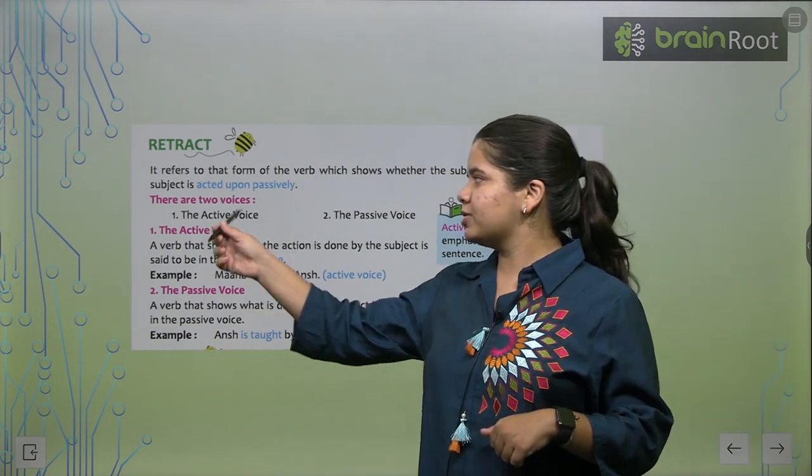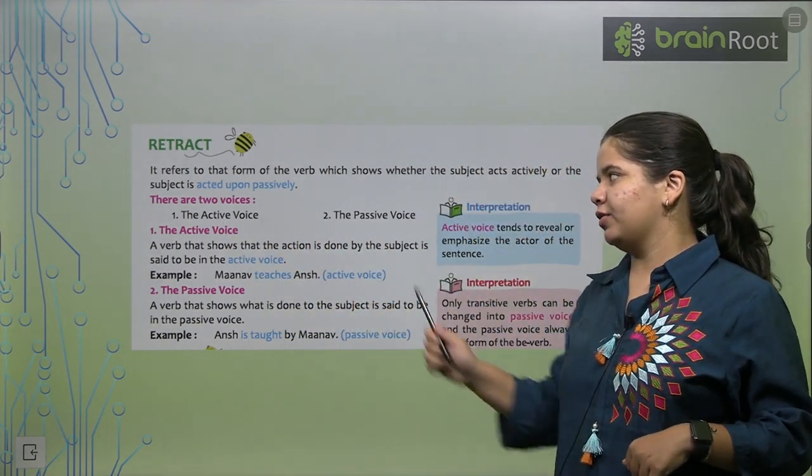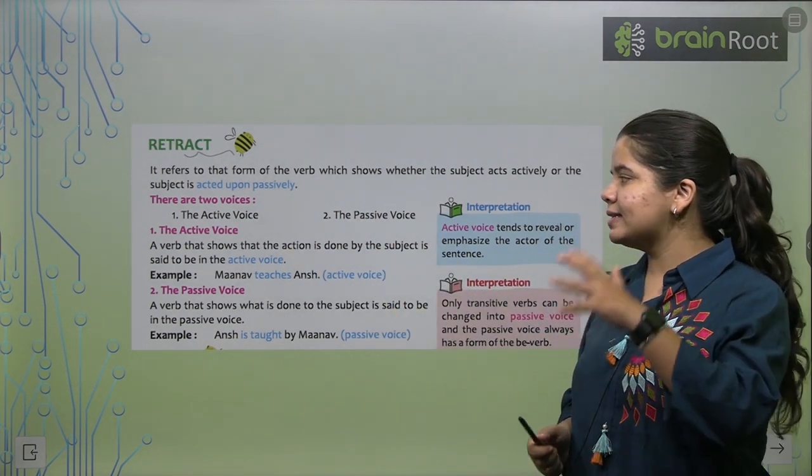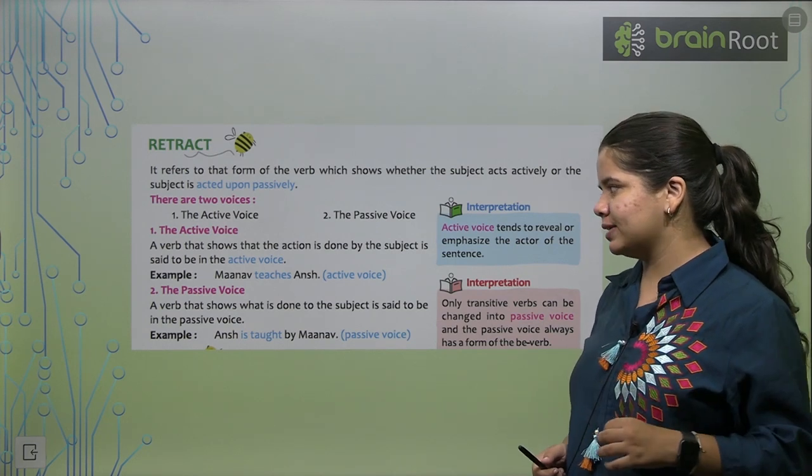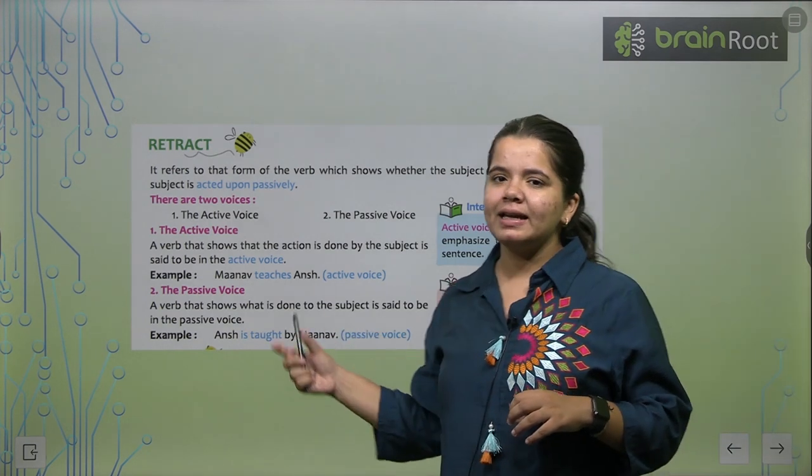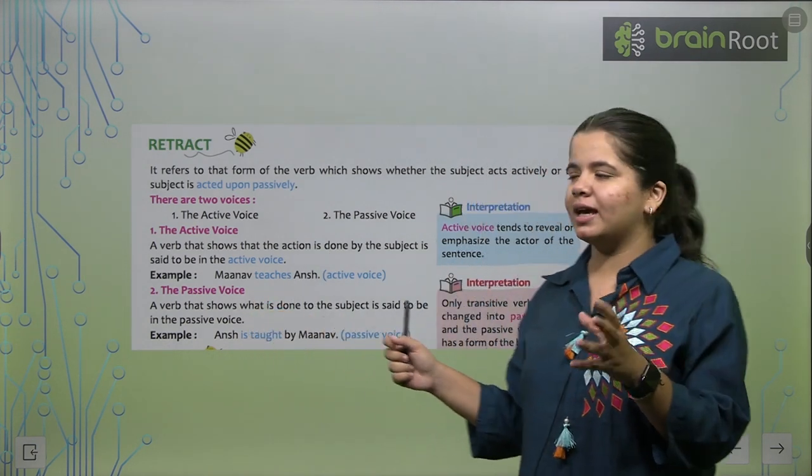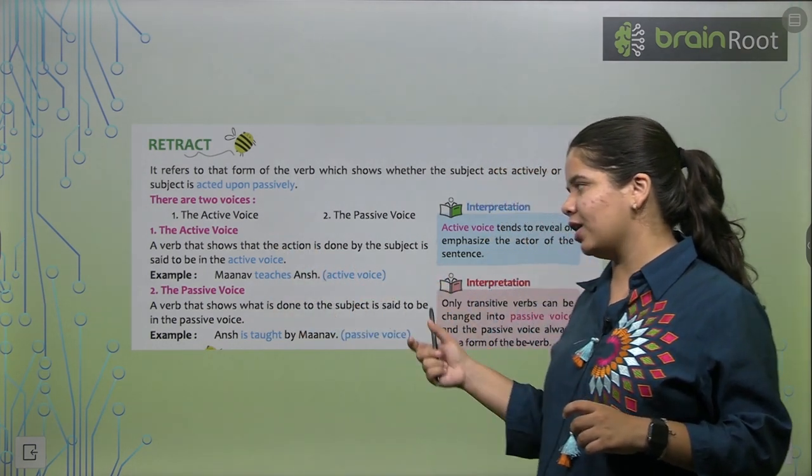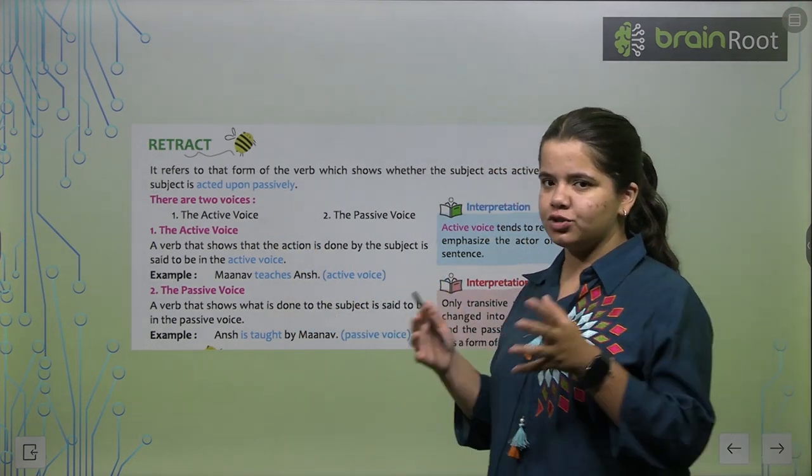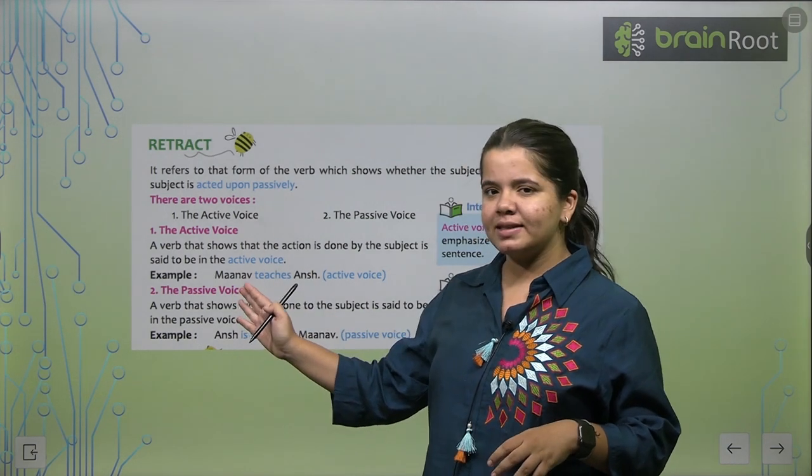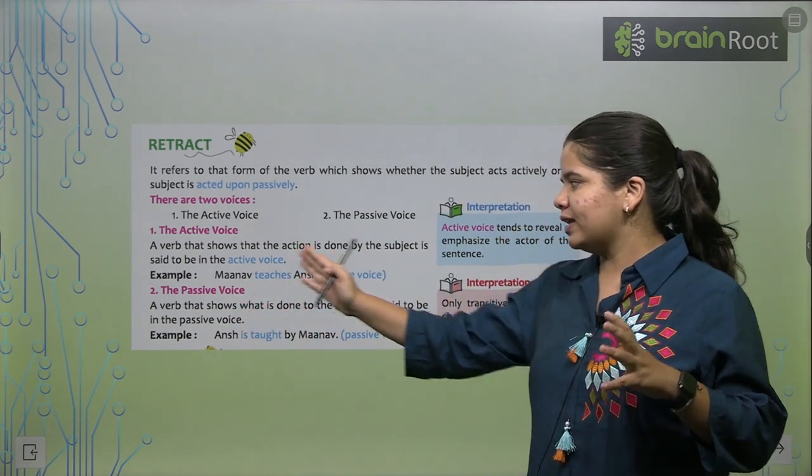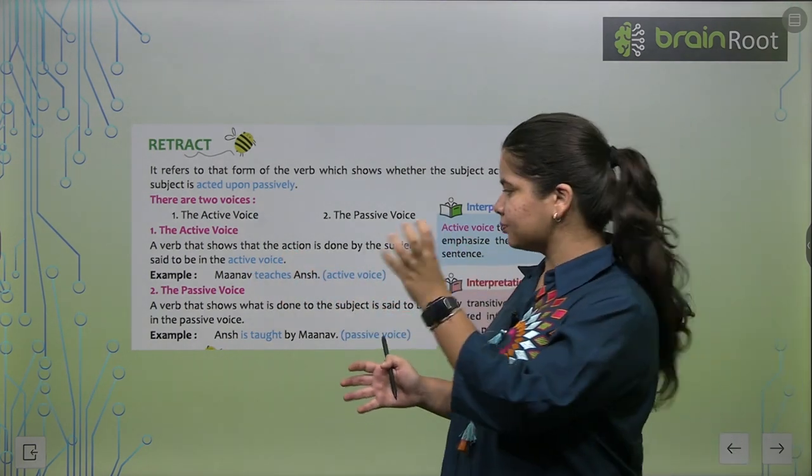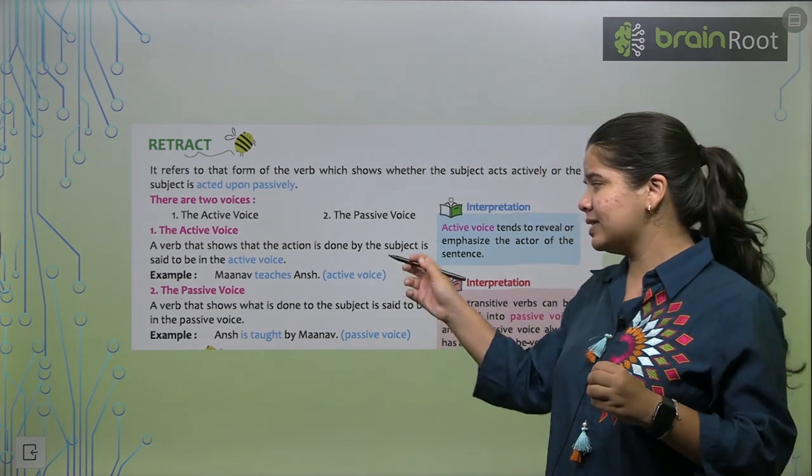Now, we have two types of voices. First is active voice, second is passive voice. The active voice is a verb that shows that the action is done by the subject. When we see that the subject has done the action, that is basically active voice. For example, Manav teaches Ansh. Manav teaches Ansh. So Manav is the subject.